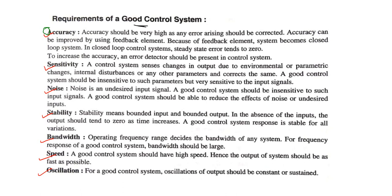Then oscillations: for a good control system, oscillations of the output should be constant or sustained. We will discuss oscillations further in the next video. If the oscillations are less then the stability of the control system is very good. All of these are the requirements of a good control system. The most important is accuracy — accuracy should be very high and it is achieved by using an error detector present in the closed-loop control system.